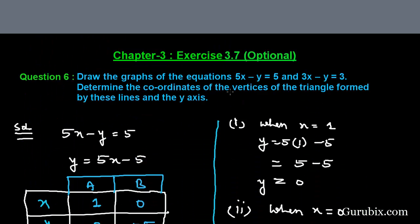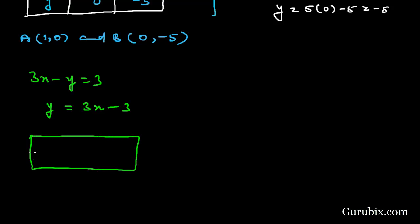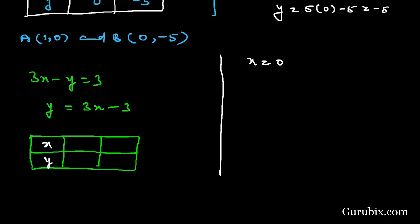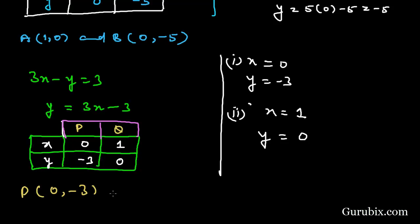Now we move to the second equation: 3x minus y equals 3. We write y in terms of x, giving y equals 3x minus 3. We draw a table with two rows and three columns. When x equals 0, y equals minus 3, and when x equals 1, y equals 0. We denote these two points as P at (0, minus 3) and Q at (1, 0).